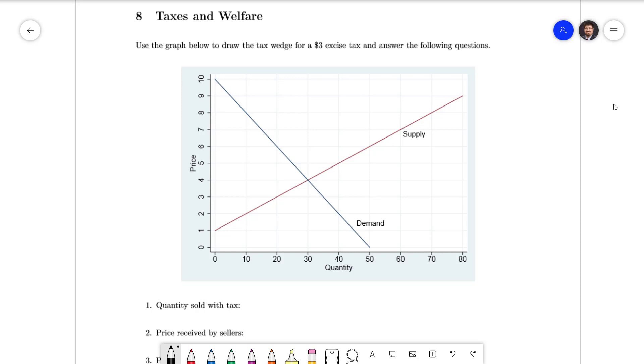We want to find a quantity that is demanded at a price $3 higher than it is supplied. That's going to happen right here at 20 where if we draw our wedge of length 3 that gets wedged right in there between the demand and supply curves.